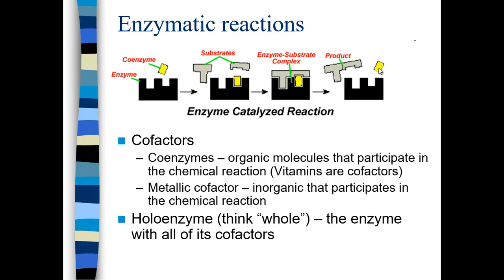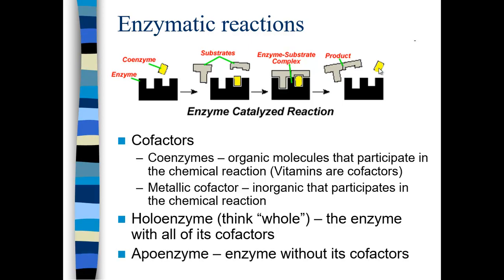When an enzyme contains its cofactors, we call it a holoenzyme — think 'whole,' not 'hollow.' An apoenzyme is an enzyme without its cofactors. Usually the enzyme, once it acquires its cofactors, is much more stable.